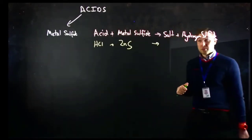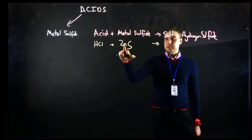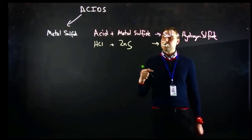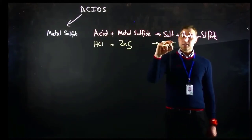Now the salt that we're going to produce: the positive part of the base, in this case it's the zinc sulphide, so it's going to be zinc. The negative part of the acid, that's going to be the chloride, so zinc chloride.